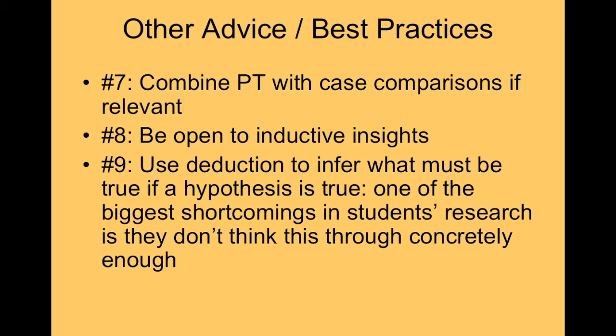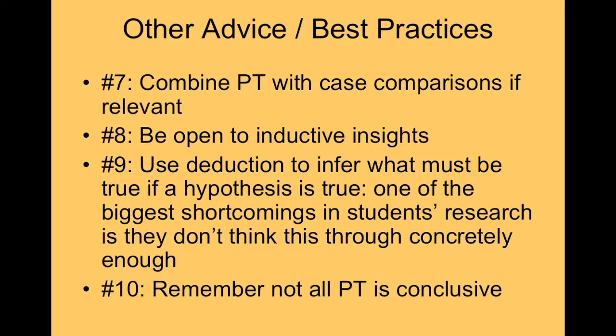Use deduction to infer what should be true if a hypothesis is true — what would be true about the process, the outcome, its timing, its magnitude. A common shortcoming in early PhD drafts is not thinking concretely about how a process would work. You have to think very specifically: who would say what to whom, what would be the sequence of events? Don't accept black-box explanations where the details are unclear. Be very specific about how that would actually have happened if the hypothesis were true.